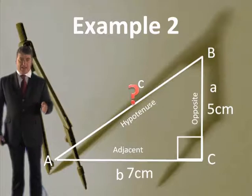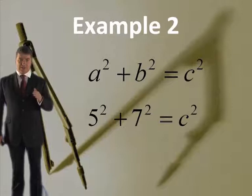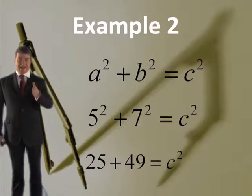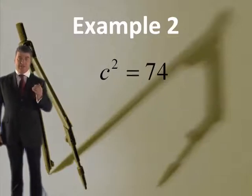Determine the length of AC here. A squared plus B squared equals C squared. You've got 5 squared plus 7 squared equals C squared. That's 25 plus 49 equals C squared. Therefore, C squared equals 74.